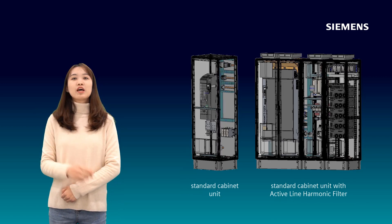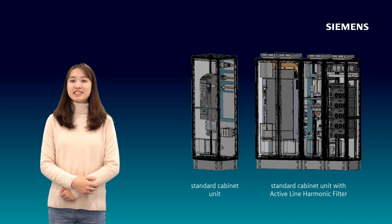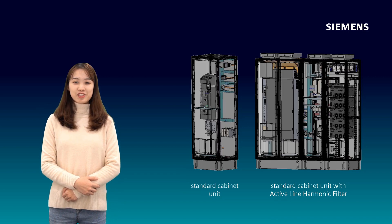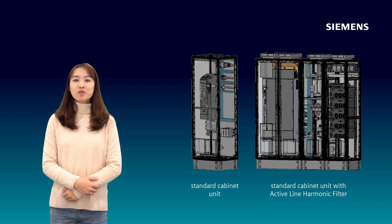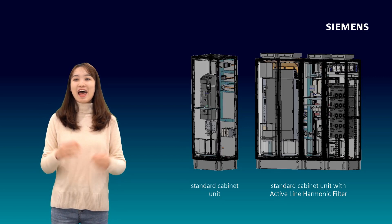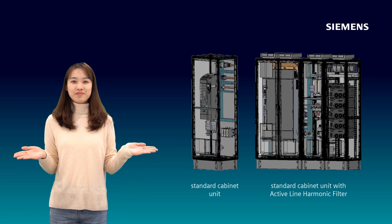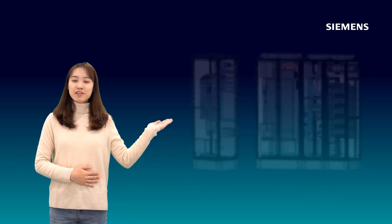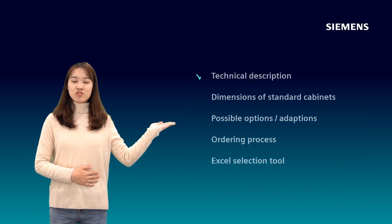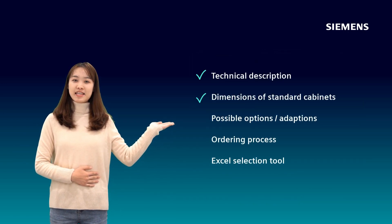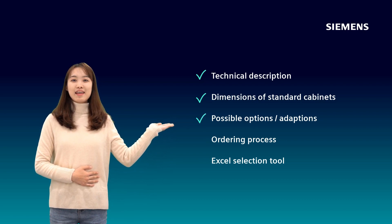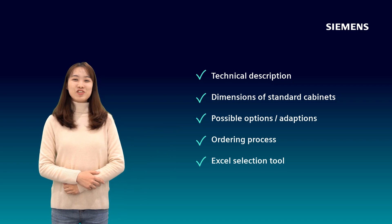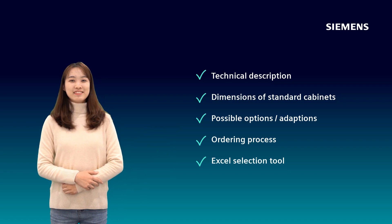Two variants — with and without active line harmonic filters — are both available as standard. You can find technical specifications, dimensions of the standard cabinet, possible options, and the ordering process on the sales portal. Please enjoy the new offering.